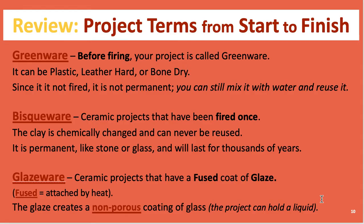Review: greenware is the clay project you've made before firing. Bisque ware is once it's been fired — it's hard and permanent like stone or glass and will last for thousands of years. Glaze ware is a ceramic project that has a fused coat of glaze added to it; glaze makes it non-porous, which means it can hold liquid.